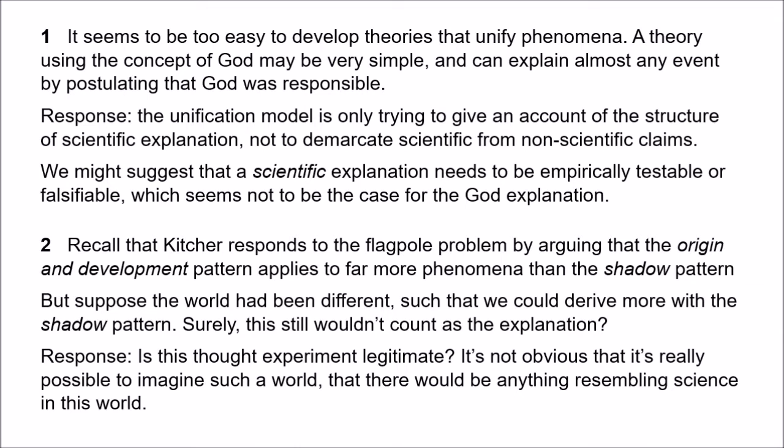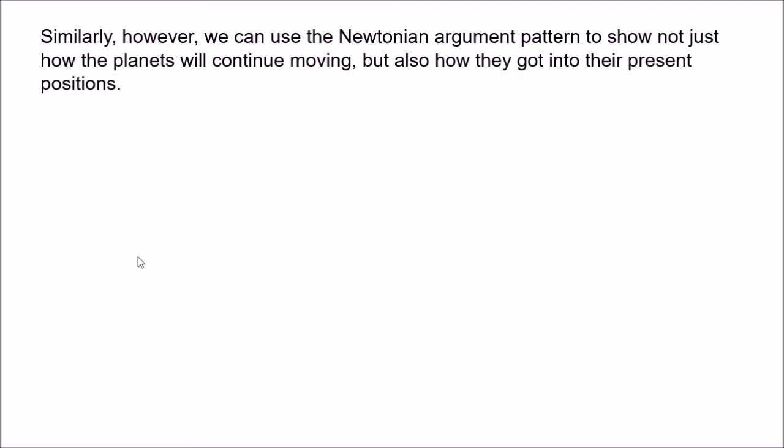That maybe answers the flagpole problem specifically, but there are similar difficulties that can't be dealt with so easily. Consider Newtonian mechanics. Just as we can use Newtonian mechanics plus the current positions of the planets to predict the orbits of the planets, we can also use the same information to retrodict their orbits. Given the current distribution of mass in the solar system we can derive facts about how the planets must have moved in the past.